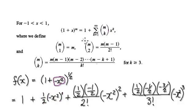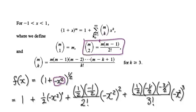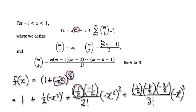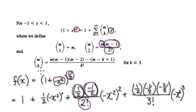The next term is when k equals two. The coefficient is m times (m minus one) over two factorial, and then it's our x squared. So it's basically m — which is one half — times (one half minus one), all over two factorial, times x squared.